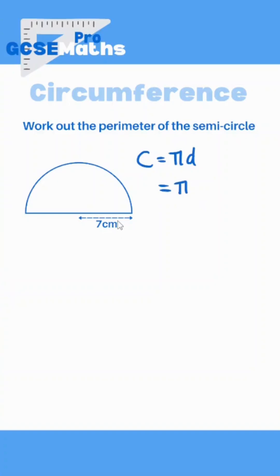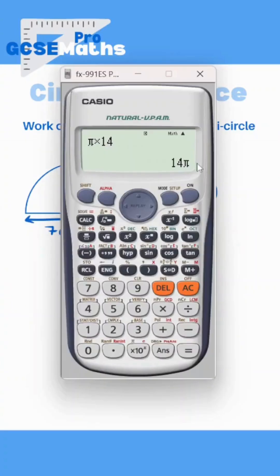So π times the diameter. Well, the 7 is actually the radius, isn't it? So the diameter is going to be two lots of 7, which is 14. So π times 14 is obviously 14π. However, as a decimal we get 43.98, which rounded to one decimal place is actually 44.0.